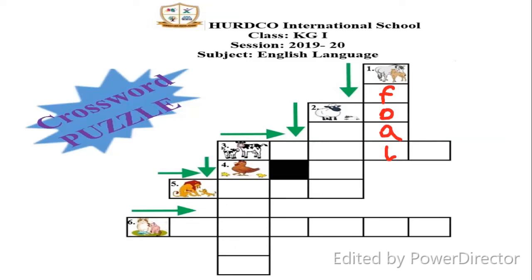Picture number two is a sheep, and the arrow is again pointing downward. The sheep's baby is a lamb.